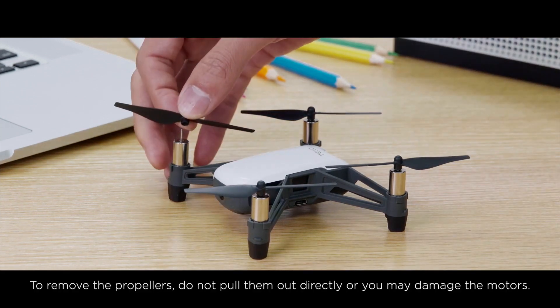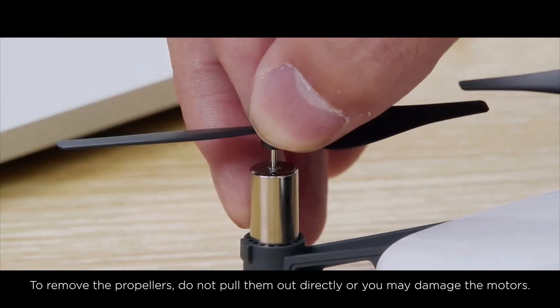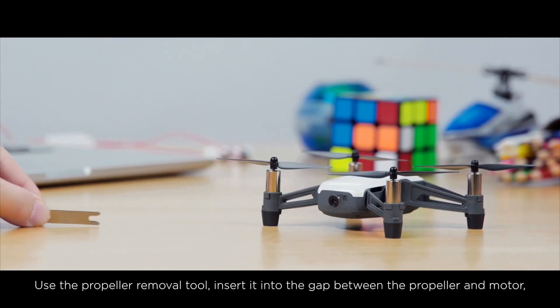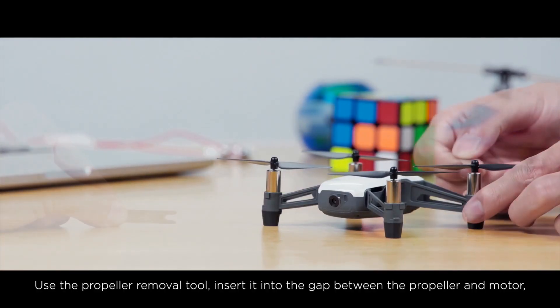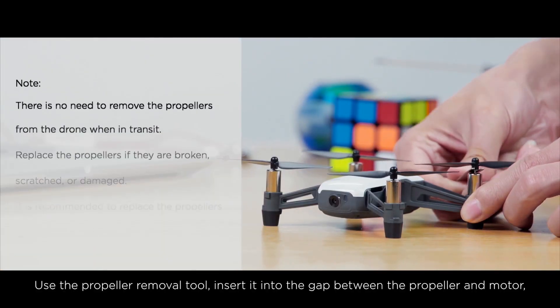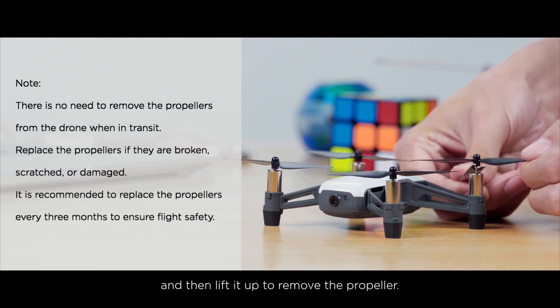To remove the propellers, do not pull them out directly or you may damage the motors. Use the propeller removal tool, insert it into the gap between the propeller and motor, and then lift it up to remove the propeller.